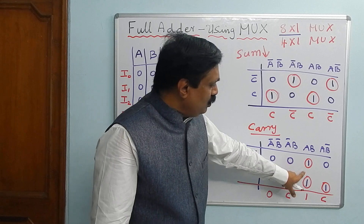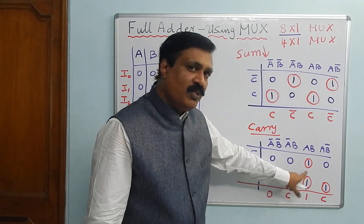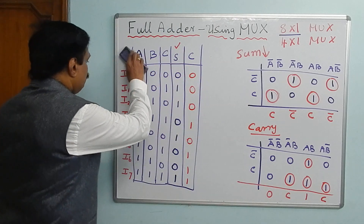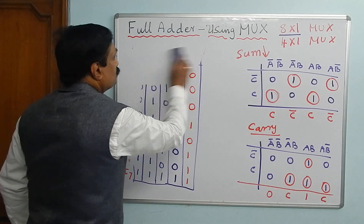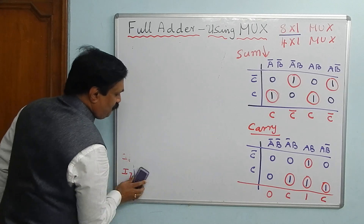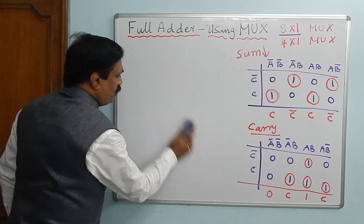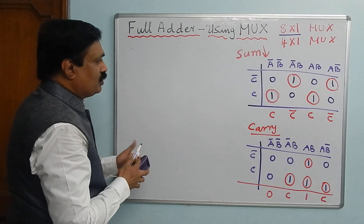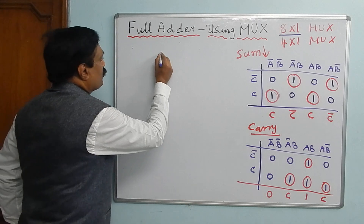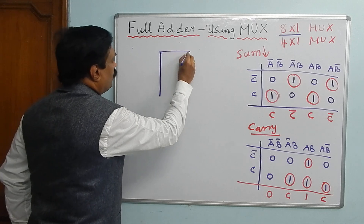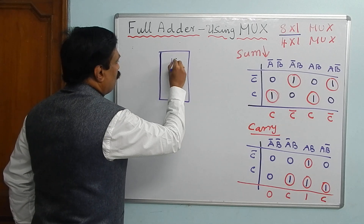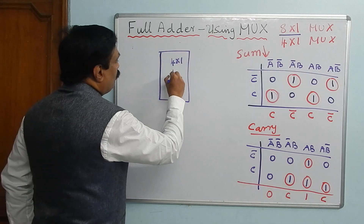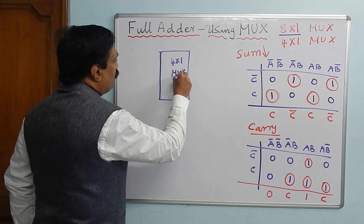For carry, where both 1s are in a column, mark 1. We need 4 inputs, so we use a 4×1 multiplexer. Take two 4×1 multiplexers — one for sum, one for carry. Each has inputs I0, I1, I2, I3. In the last class we connected two 8×1 MUXes; this time we use 4×1, reducing the number of inputs.